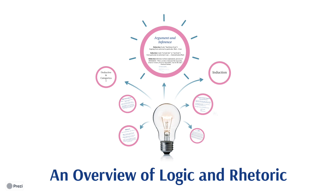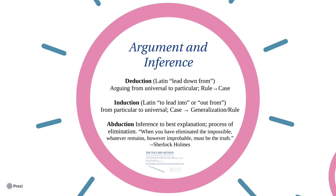Let us begin in good philosophical fashion with a clarification of our terms. There are three general approaches to reasoning. When we start with what we already know is the case — a general rule, that is, a universal concept — and we try to bring that down to make sense of a particular thing or answer a particular question, this is deductive reasoning: arguing from the universal to the particular. When we argue all men are mortal, Socrates is a man, therefore Socrates must be mortal, this is a classic deductive method.